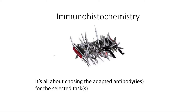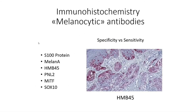Immunohistochemistry is a complex tool and is going to be about choosing the adapted antibody for your selected task. Among the different types of antibodies, we have melanocytic antibodies that recognize the melanocytes with some variety in specificity and sensitivity.